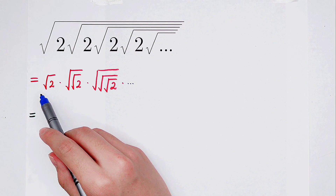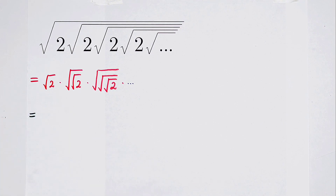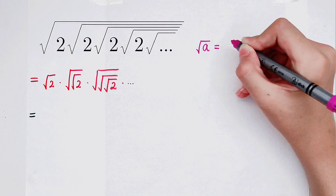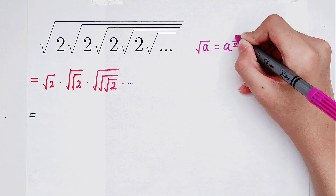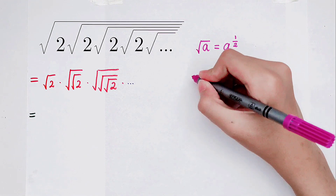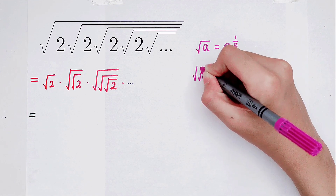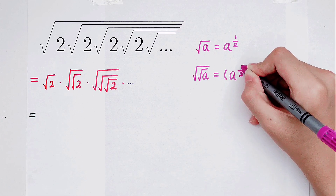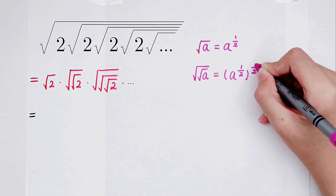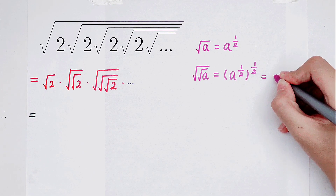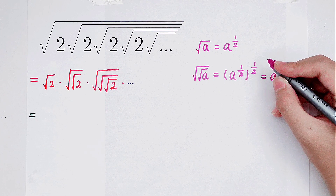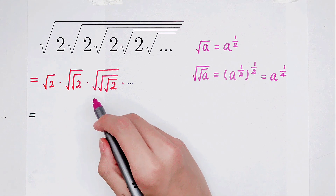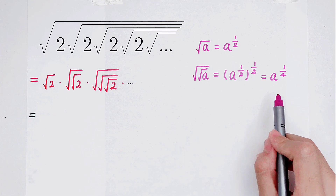This square root can be written as an exponent. We all know that the square root of a can be written as a to the power one-half. And what about the square root of the square root of a? It is a to the power one-half, and then to the power one-half, so that is a to the power one-fourth. And the square root of the square root of the square root of a is a to the power one-eighth.